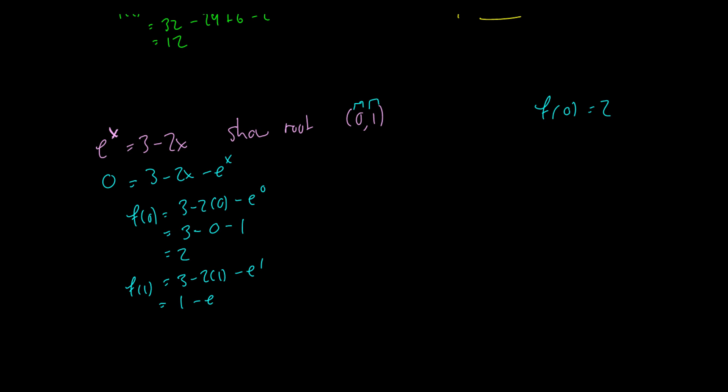Now of course you might not be able to get further than this if you don't know what value e is but e is roughly 2.71 it might be 2.17 either way it's bigger than 2 which means that f(1) is we're going to say it's roughly -1.5. The exact values don't matter. Again we just need to know that